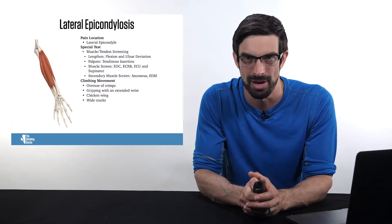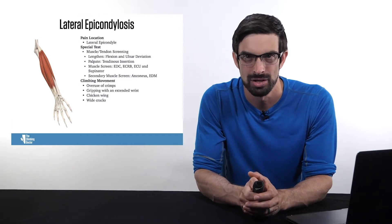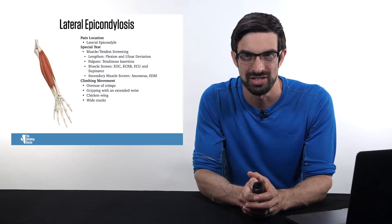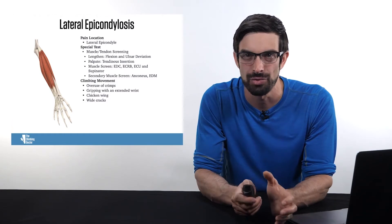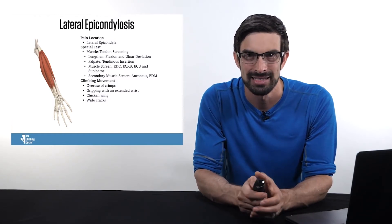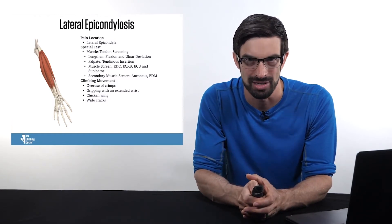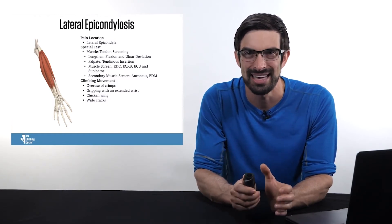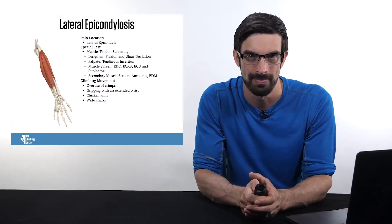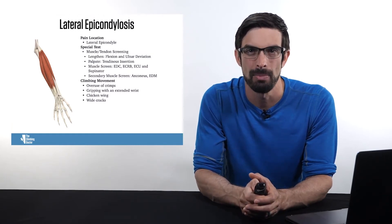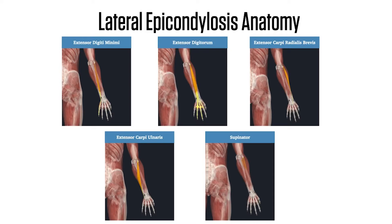First, to lengthen the muscles, going through flexion and ulnar deviation to see if that generates symptoms. Next, to palpate the tendinous insertion to see if that generates lateral elbow pain. And finally, to go through a muscle screen: extensor digiti minimi, extensor digitorum, extensor carpi radialis brevis, extensor carpi ulnaris, as well as the supinator.